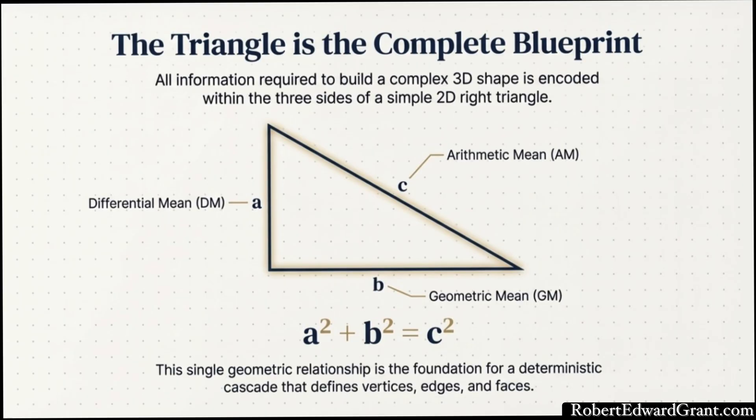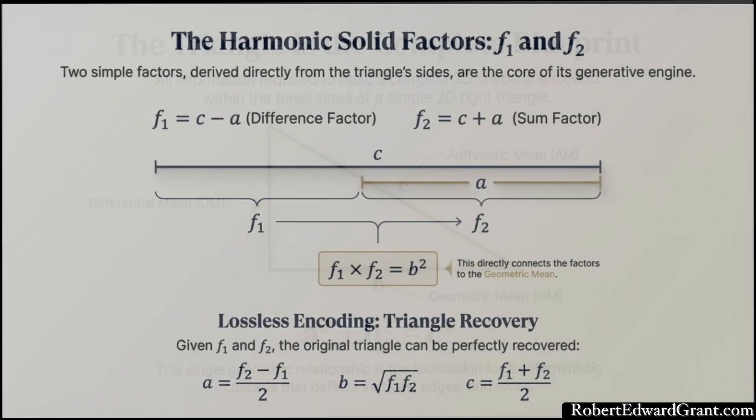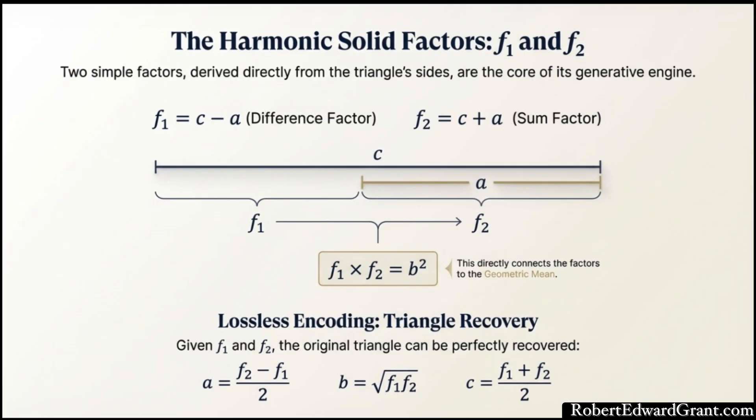The arithmetic mean is the simple average we all know. The geometric mean B is about the mean of proportions. Those three numbers A, B, and C somehow encode the entire structure. The research shows how you extract core factors from the triangle. They define a difference factor F1, which is the hypotenuse minus the short leg, C minus A, and a sum factor F2, which is the hypotenuse plus the short leg, C plus A.